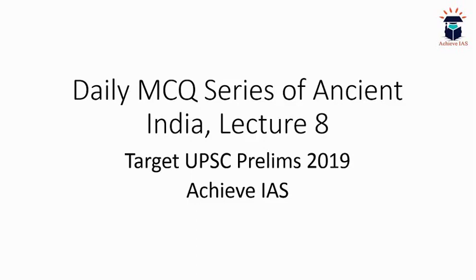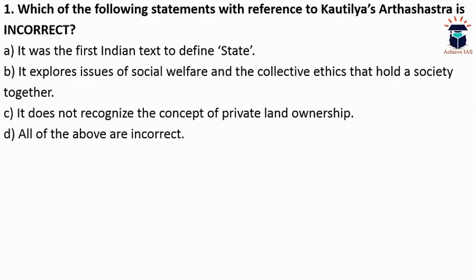Let's start our lecture of Ancient India — Lecture number 8. The first question is: which of the following statements with reference to Kautilya's Arthashastra is incorrect? Option A: it was the first Indian text to define the state. Option B: it explores issues of social welfare and the collective ethics that hold society together. Option C: it does not recognize the concept of private land ownership. Option D: all of the above are incorrect. The correct answer is C.